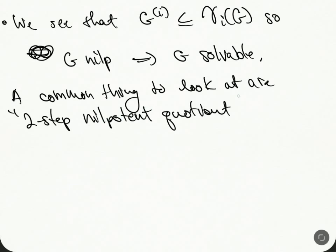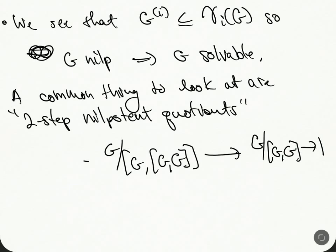People do this a lot with fundamental groups. So they'll take G, they'll mod out by [G,G] and then they'll go to the abelianization. And then what they'll do is they'll take [G,G] and then they'll mod out by [G,[G,G]]. This is the